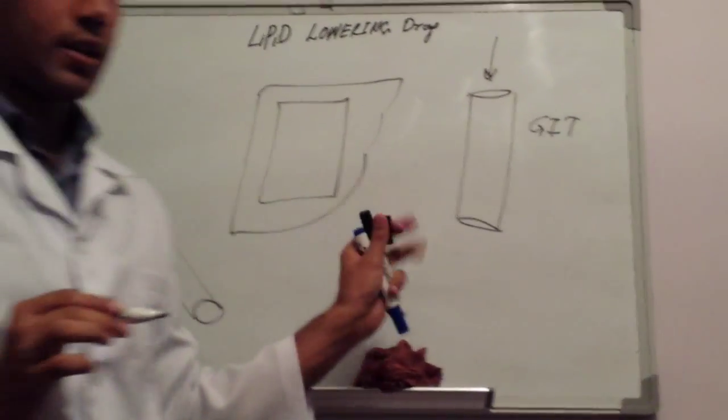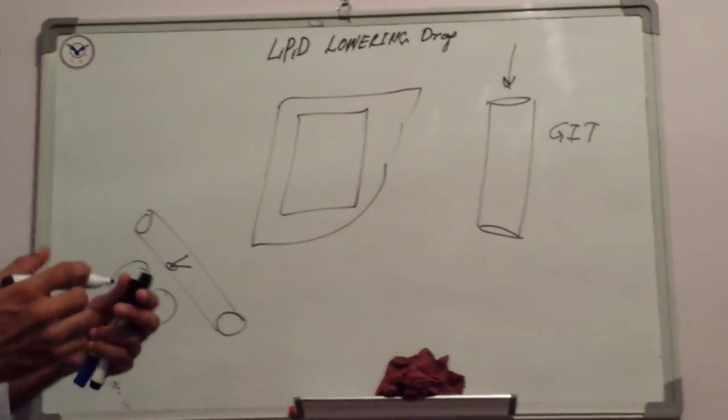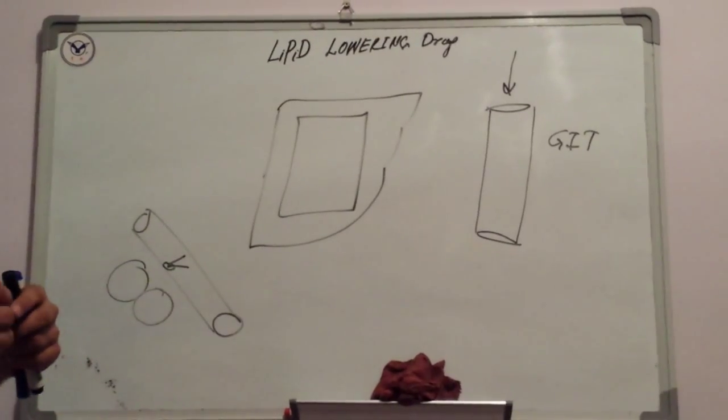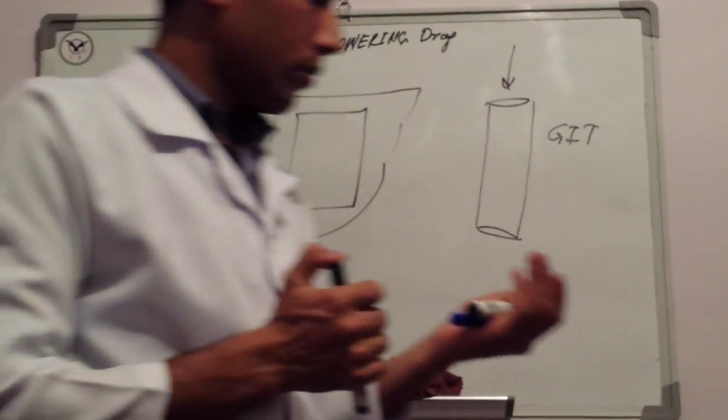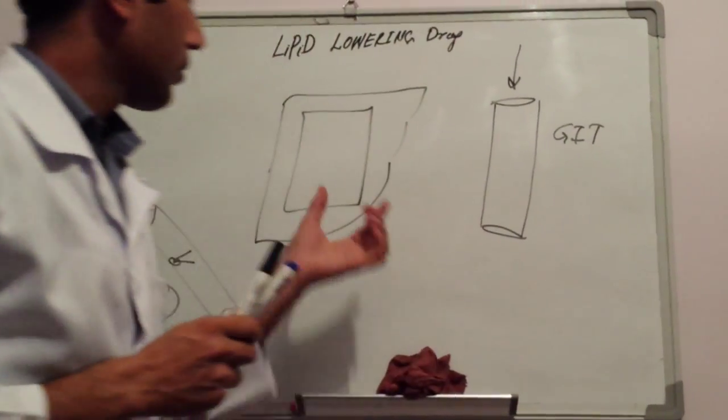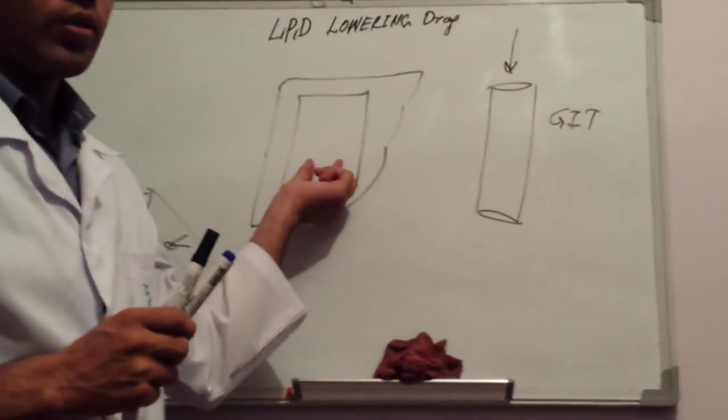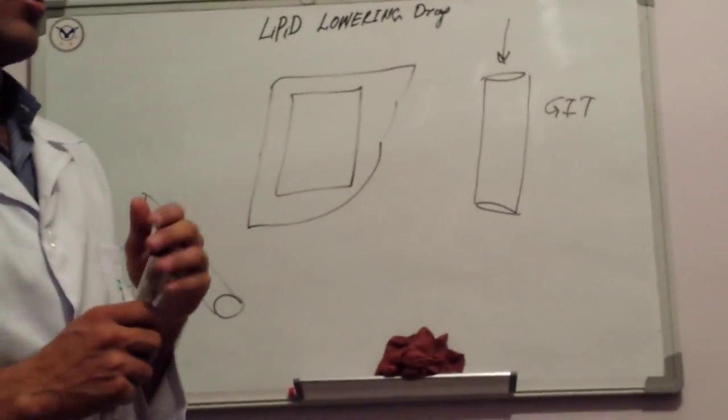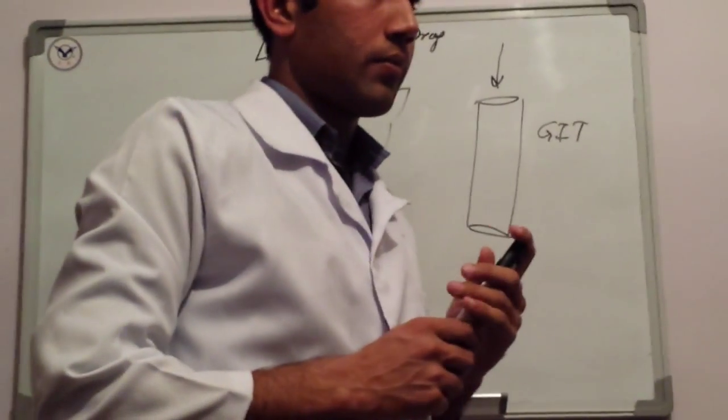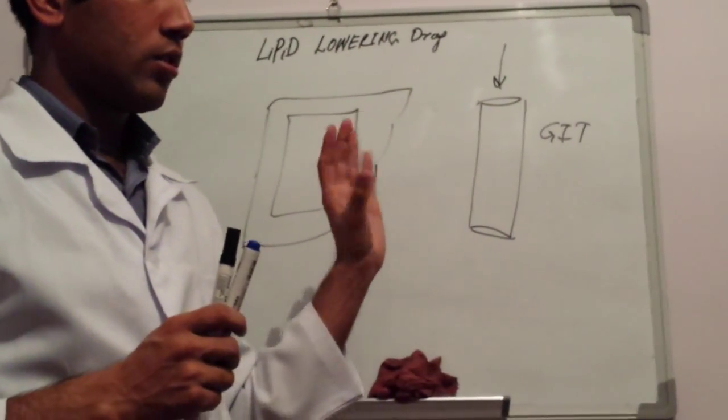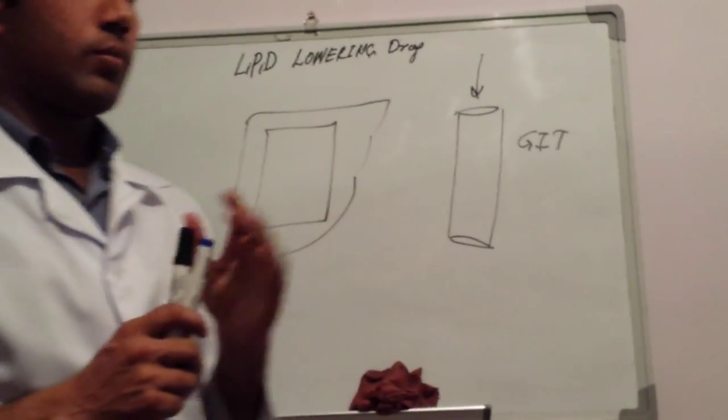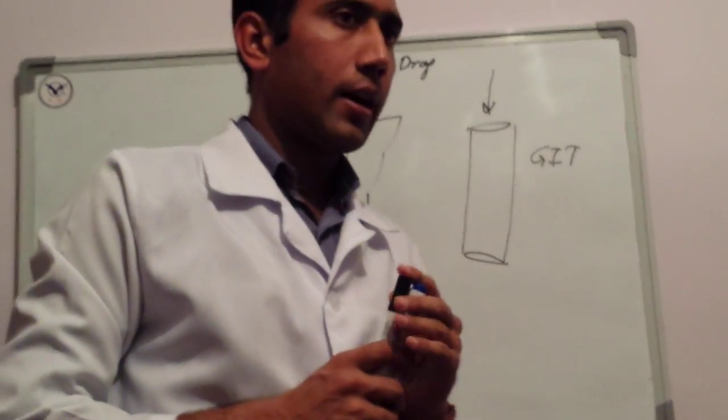This is the structure for the statin family. If you don't get cholesterol from the diet, then your body will start to produce cholesterol. Cholesterol is so important. Cholesterol and iron - these are two molecules essential for the body.